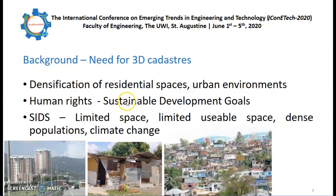The Sustainable Development Goals have several indicators that relate to land rights and link the responsible and equitable allocation of land tenure to a decrease in poverty, the sustainability of food, environmental sustainability, and many other benefits. Small island developing states such as Trinidad and Tobago require cadastres to equitably allocate the limited space they possess, especially since the usable space is even more limited. Populations are relatively dense, and climate change is further reducing the available coastal space as a result of sea level rise, storm surge inundation, and coastal erosion.